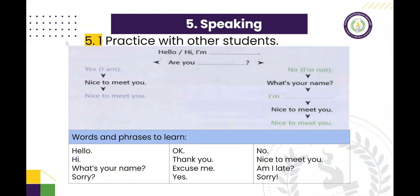Hello. Hi, I'm — put your name in here, for example: Hi, I'm Chile. And when you want to ask someone's name: Are you — for example, are you Tida? You're asking because you're not sure about their name. If they say yes, I am, then you can say nice to meet you, and the other friend might say nice to meet you too. And if they say no, you might say: then what's your name?